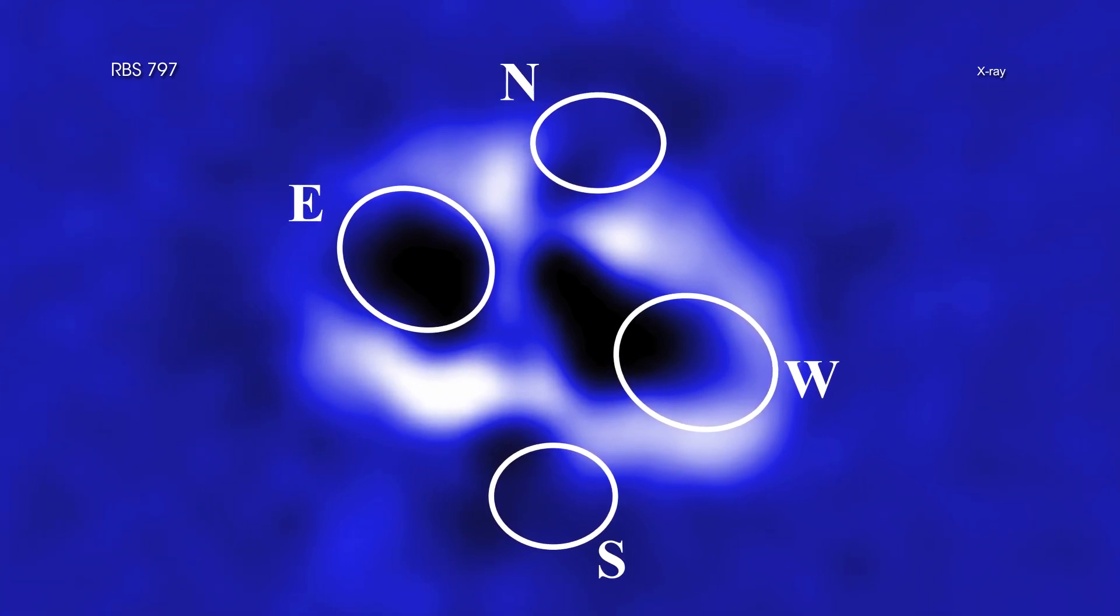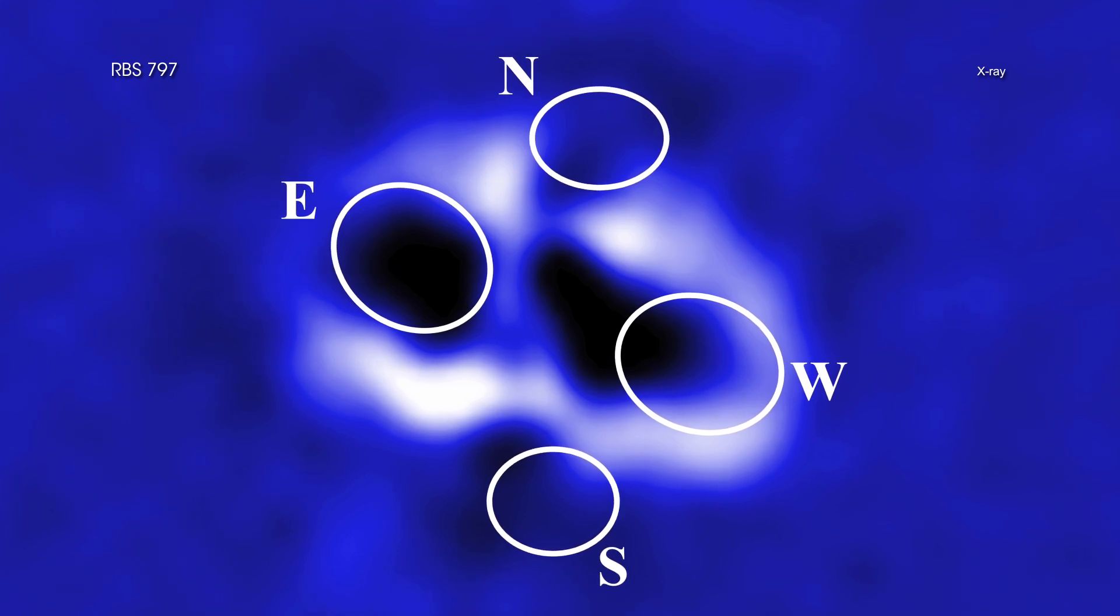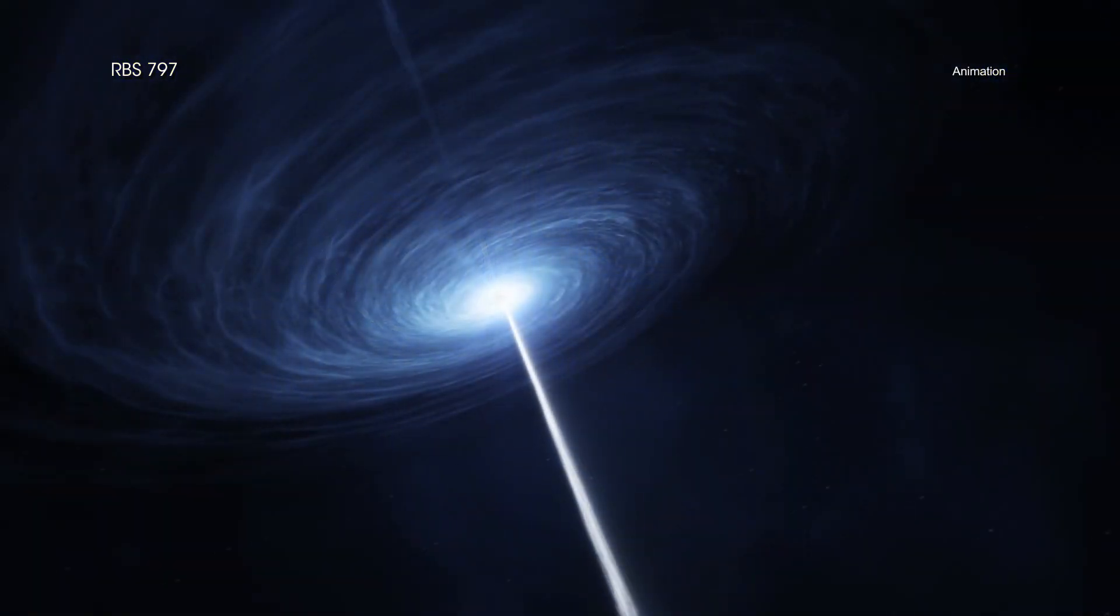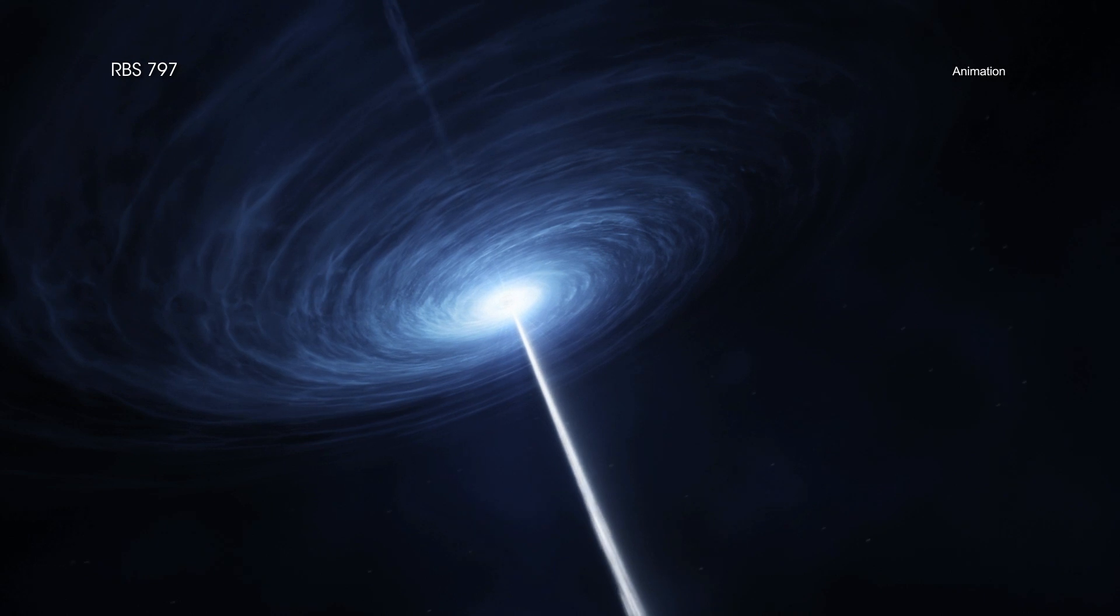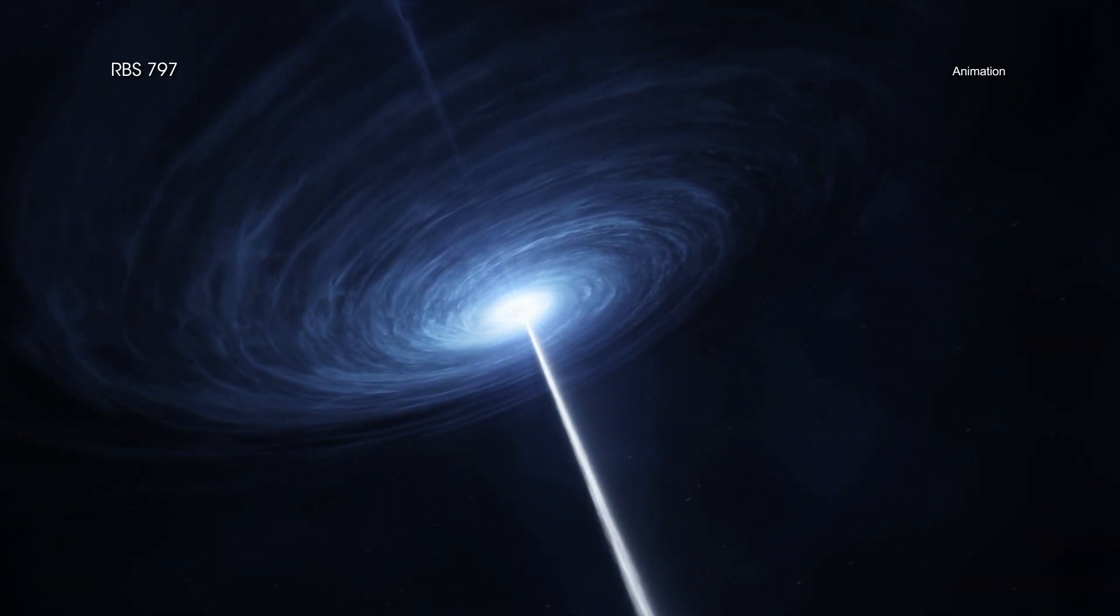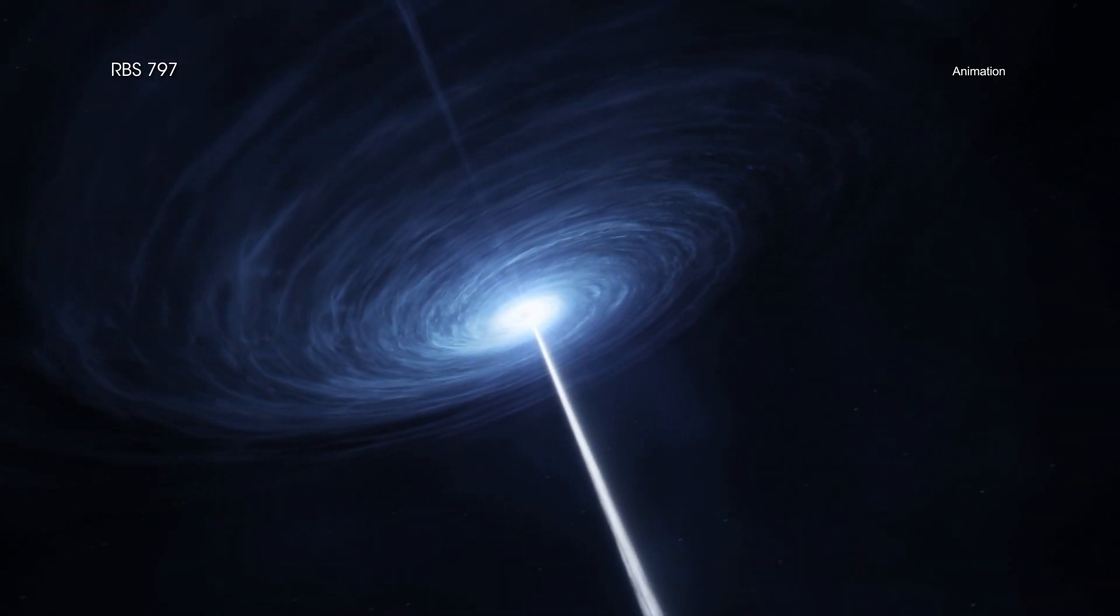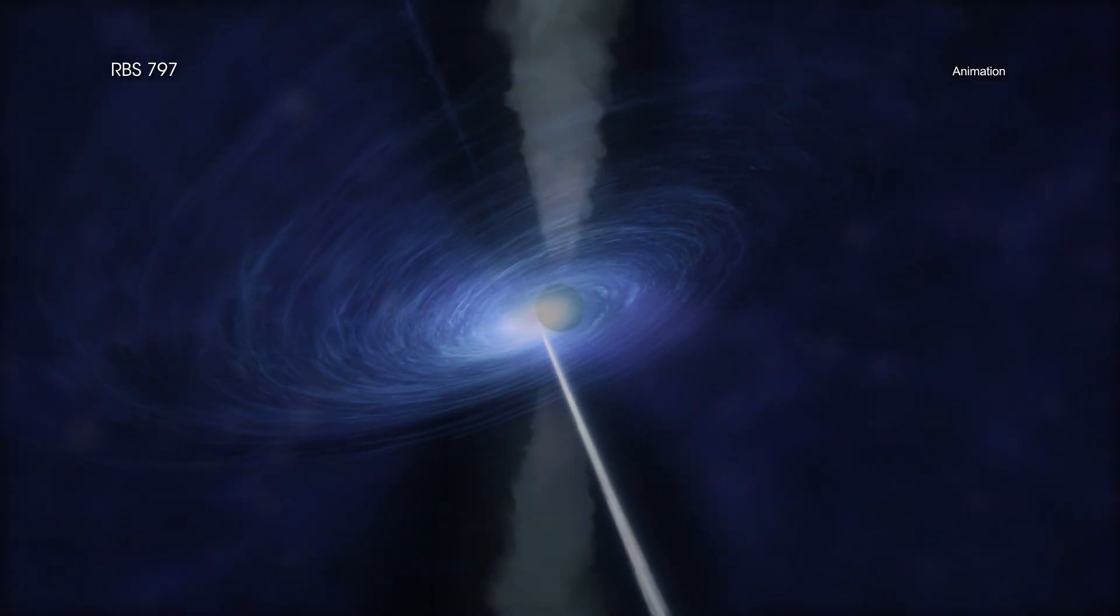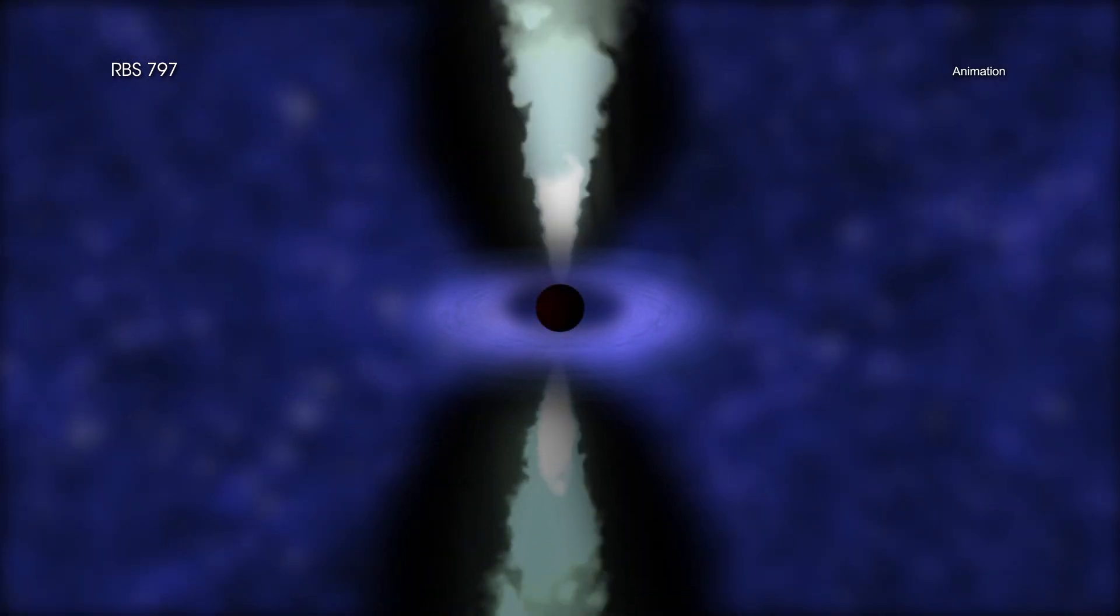These types of cavities have been seen before in other galaxy clusters. Scientists think they are the result of eruptions from regions near a supermassive black hole in the middle of the massive central galaxy. As matter flies away from the black hole as jets in opposing directions, it blows cavities in the hot gas.